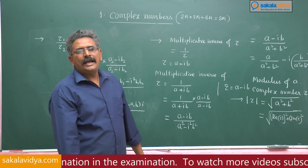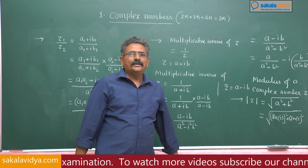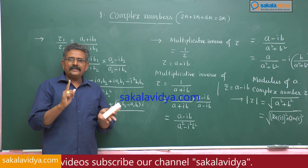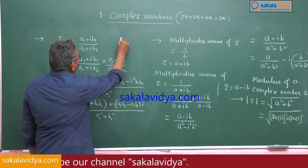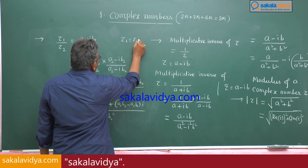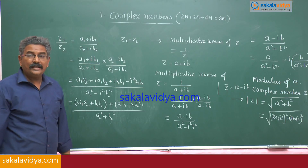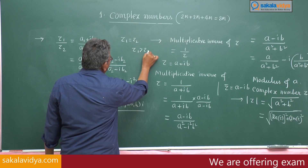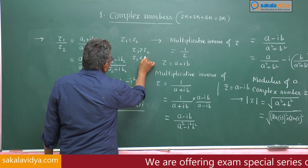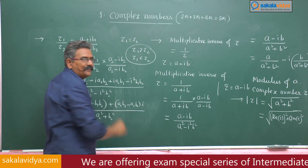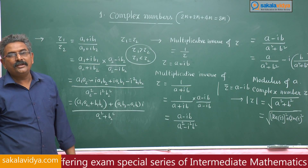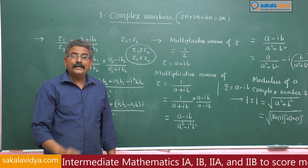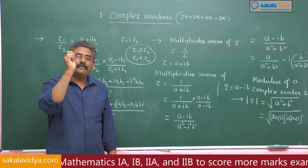Let us consider one question. We can equate two complex numbers — that means z1 equals z2 we can write — but can we compare two complex numbers? Like, can we say z1 is greater than z2 or z1 is less than z2? Absolutely no. That means the inequality property does not hold good in the complex number system.